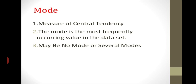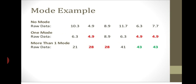Mode is one type of central tendency. The mode is the most frequently occurring value in a dataset. There may be no mode or several modes — data can occur with a single mode, several modes, or there may be no mode at all.